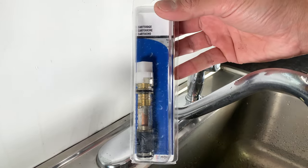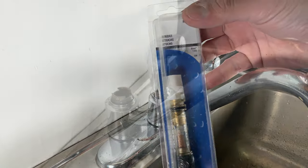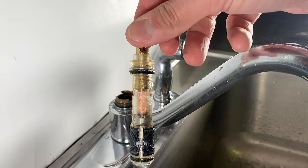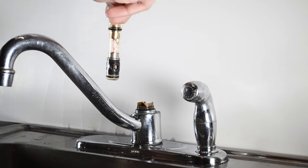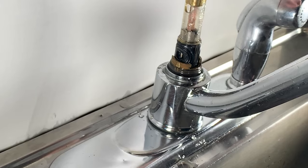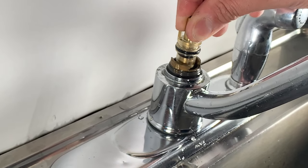Here we have a brand new 1225 Moen cartridge. To reinstall the new cartridge, make sure that the half moon ridges on the cartridge are just like this, in the front and back.